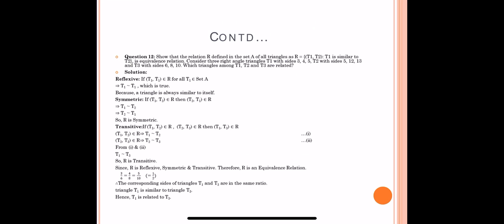Since R is reflexive, symmetric, and transitive, therefore R is an equivalence relation. Now three triangles are given: T1 with sides 3, 4, 5; T2 with sides 5, 12, 13; and T3 with sides 6, 8, 10. We have to check which of these triangles are similar.